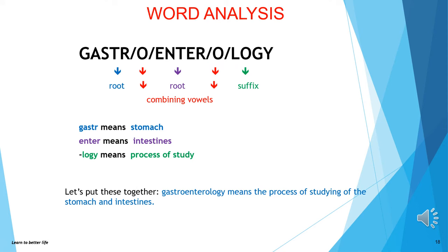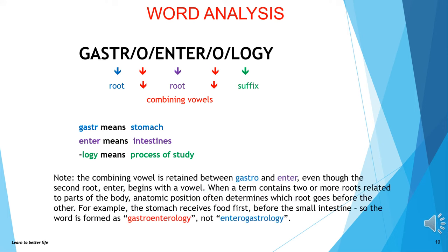Let's do some more word analysis: gastroenterology. Gastroenterology means the process of studying the stomach and intestines. Please note the combining vowel is retained between gastro- and enter-, even though the second root, enter-, begins with a vowel. When a term contains two or more roots related to parts of the body, anatomic position often determines which root goes before the other. For example, the stomach receives food first before the small intestine, so the word is formed as gastroenterology, not enterogastrology.